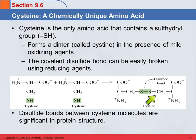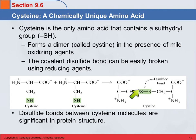This disulfide bond that forms between cysteine molecules is quite significant in protein structure. Proteins are long polymers of amino acids, and they arrange themselves in certain ways. One of the things that causes them to form the structures that they do is if you have cysteine residues close together, they can form these disulfide bonds.